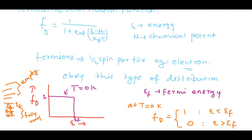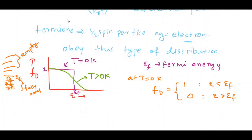At temperature greater than 0 Kelvin, this graph has a small change — there is a small deviation and it curves upward like this. This graph is for T greater than 0 Kelvin. When T is greater than 0 Kelvin, you have given some heat energy, so electrons will use that thermal energy and some electrons will jump to higher energy states. This is what happens at T greater than 0 Kelvin. This is a small introduction to the Fermi-Dirac distribution function.